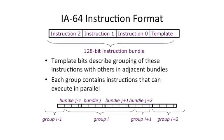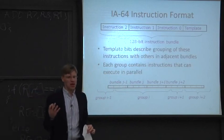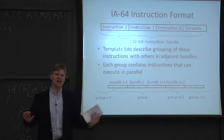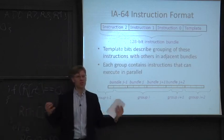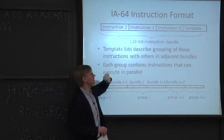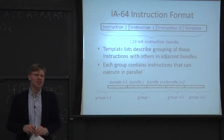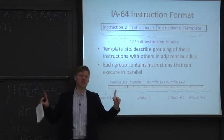Itanium has a 128-bit instruction bundle that fits three operations. There are template bits describing what is in the bundle, so it's not actually a fixed format — instruction boundaries can move around a bit. This allows mixing immediate instructions with non-immediate ones to get more space for immediate bits or branch offsets. The template bits also describe how a particular bundle relates to other bundles around it — sometimes called begin/end or start/stop bits — indicating how many instructions can execute explicitly in parallel.